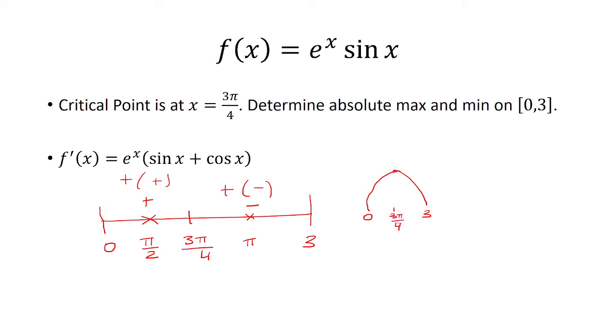So clearly, the maximum has to be at x equals 3 pi over 4. Now, if I want to find the minimum, the minimum is either at 0 or 3. So I have to test those points.